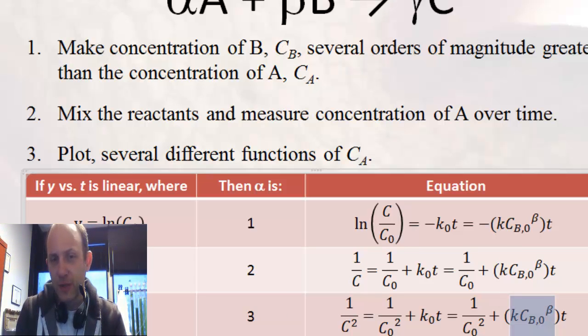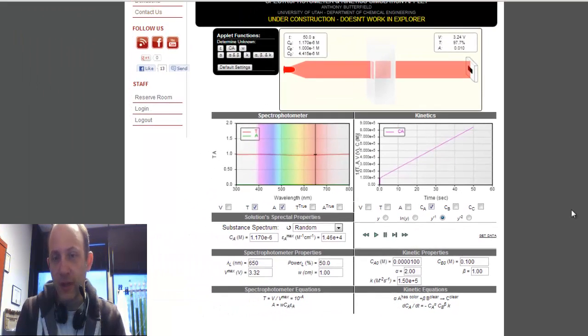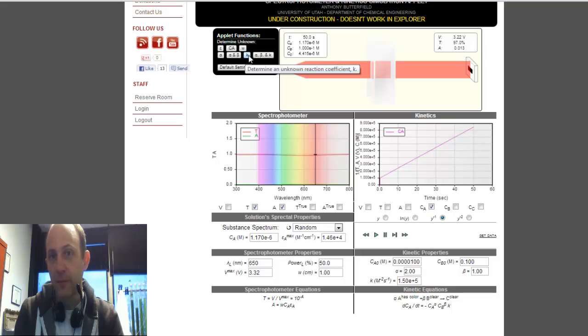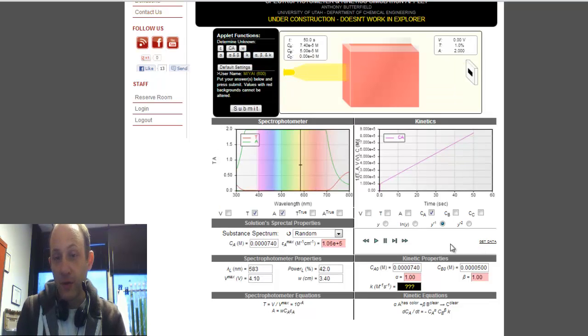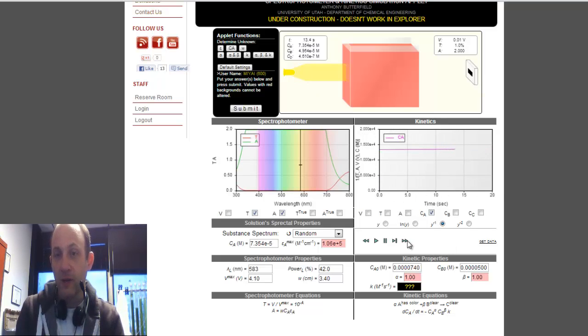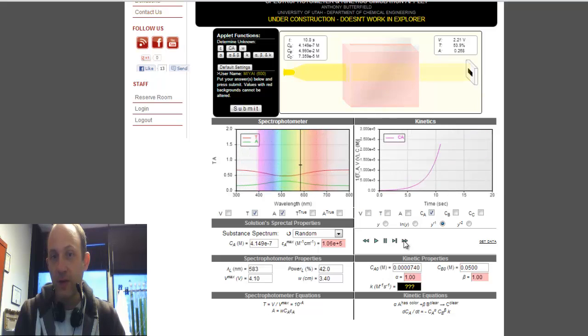So, that should get you far enough to do the alpha part. Now, let's say I want to determine an unknown reaction coefficient. So, I'm going to select that, run the reaction, and I'm not going to see any change. That's because the concentration of A is on the same order as the concentration of B. If I up the concentration of B, until I see a reaction, there we go.